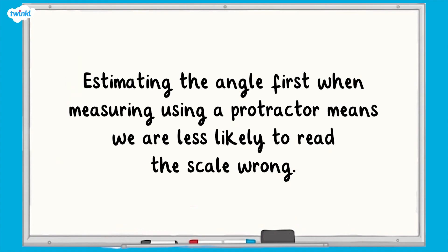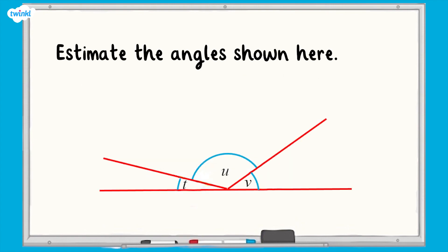Estimating the angle first when measuring using a protractor means we are less likely to read the scale wrong. Let's estimate the angles shown here. Pause the video to decide if they are acute or obtuse.